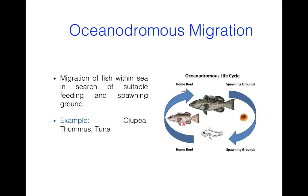Oceanodromus migration means migration of fish within the sea only, in search of suitable feeding and spawning grounds. In the diagram you can see fishes moving from the spawning ground to the home reef and then again moving from the home reef to the spawning ground — but always within saltwater, within the sea only. Oceanodromus migration is shown by fishes like Clupea, Thunnus, and tuna.